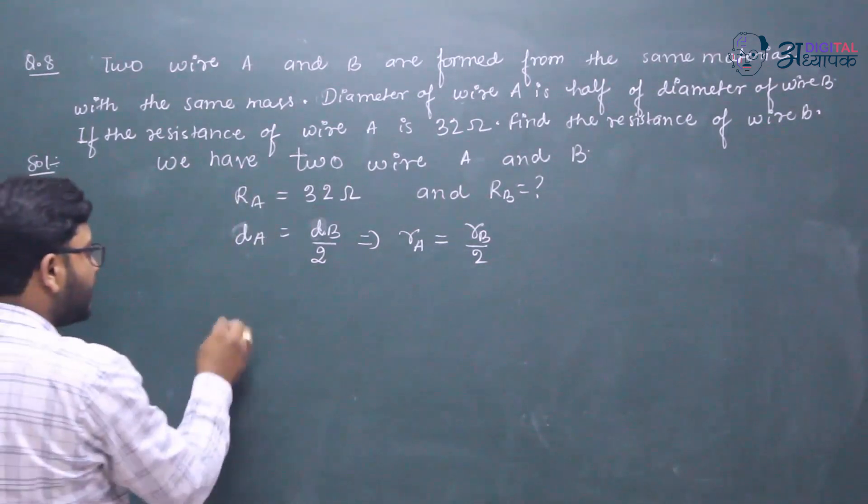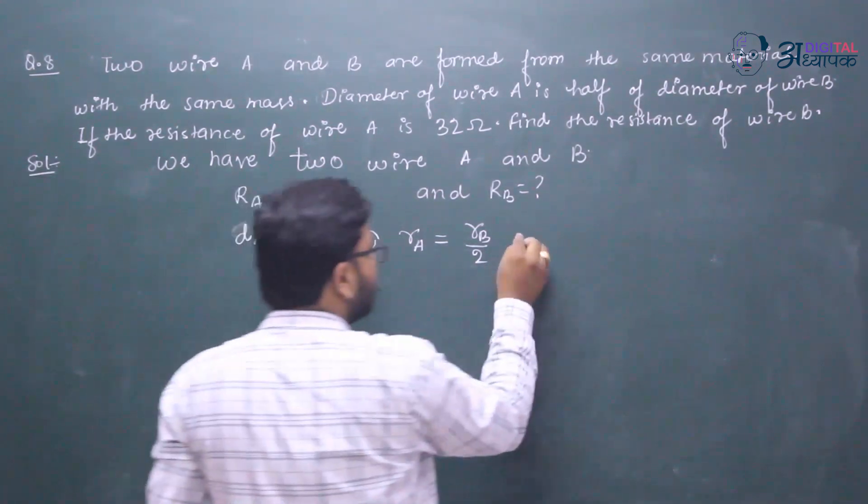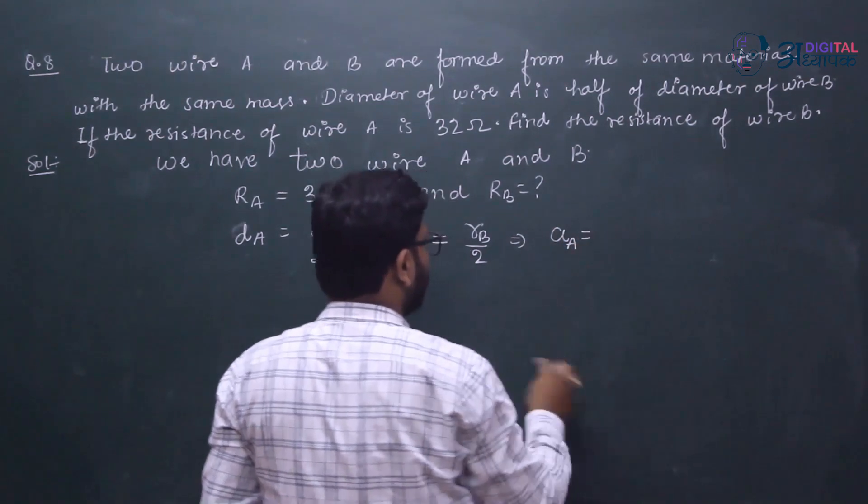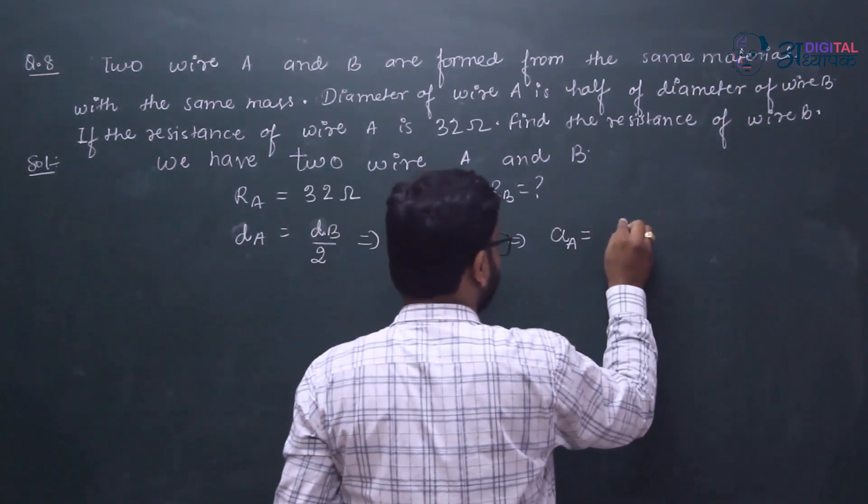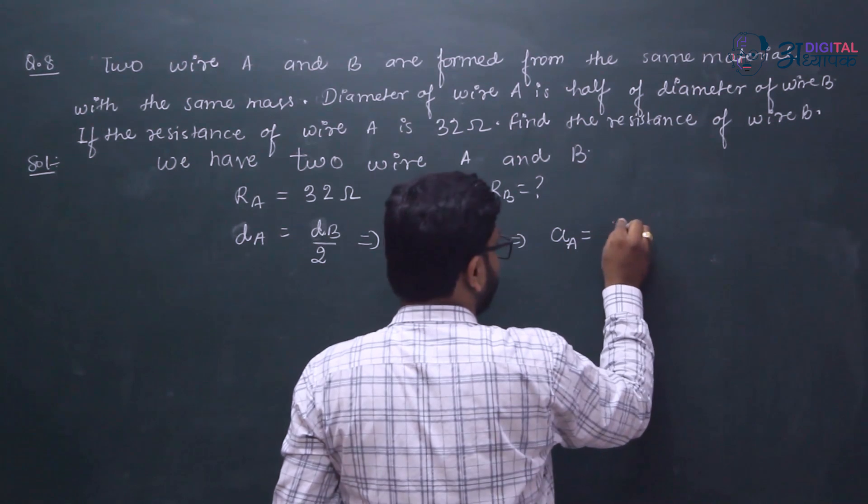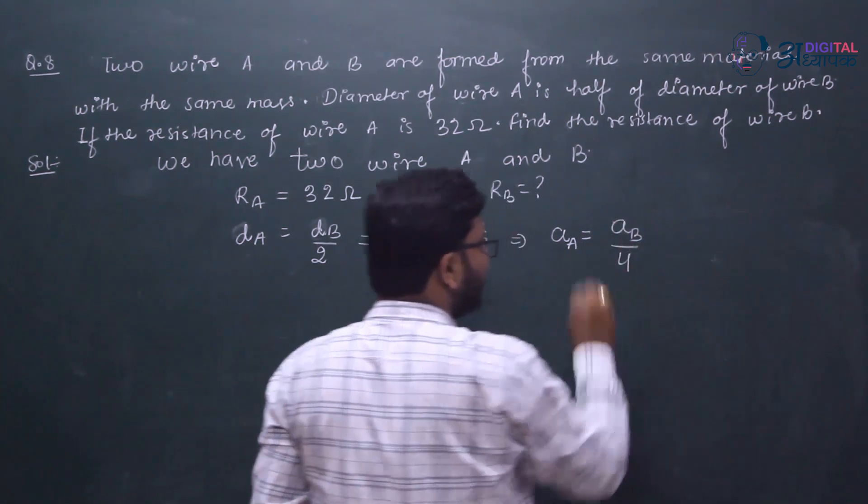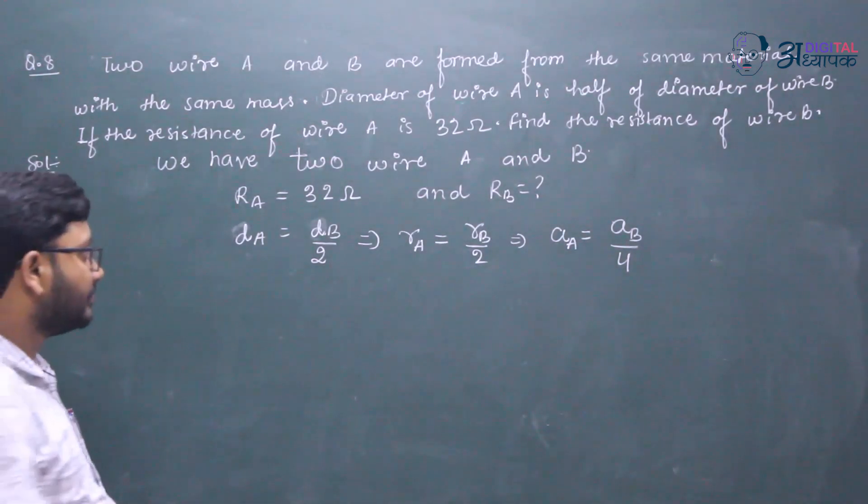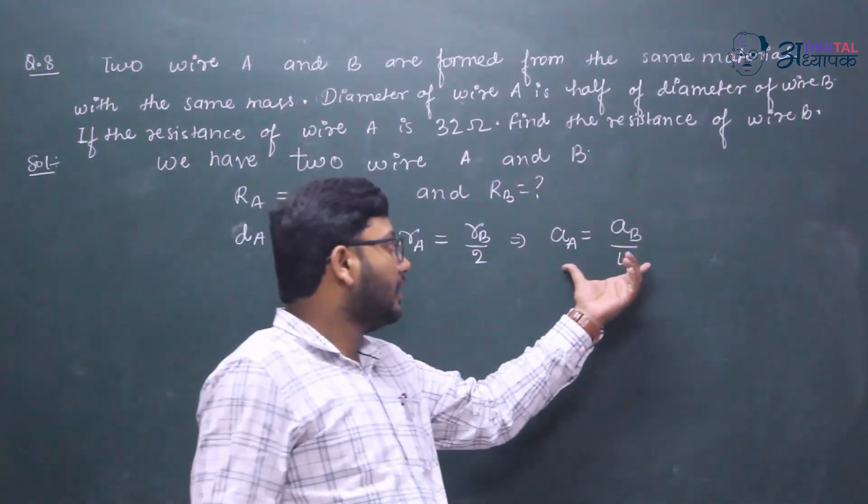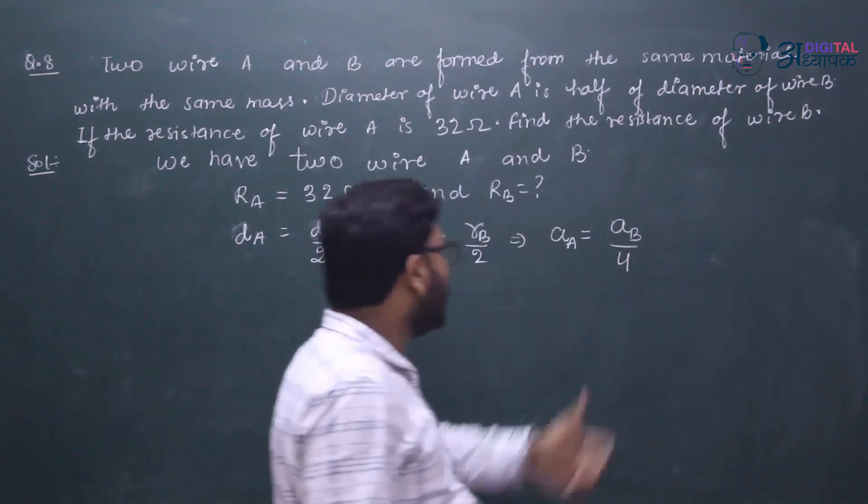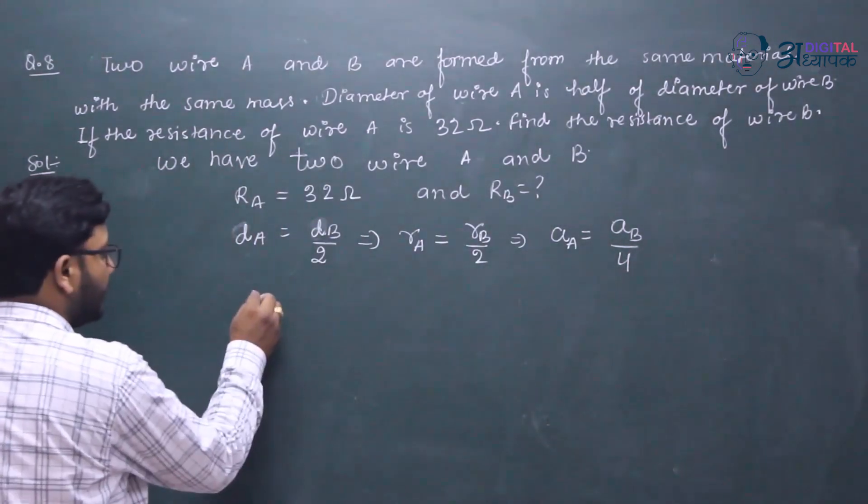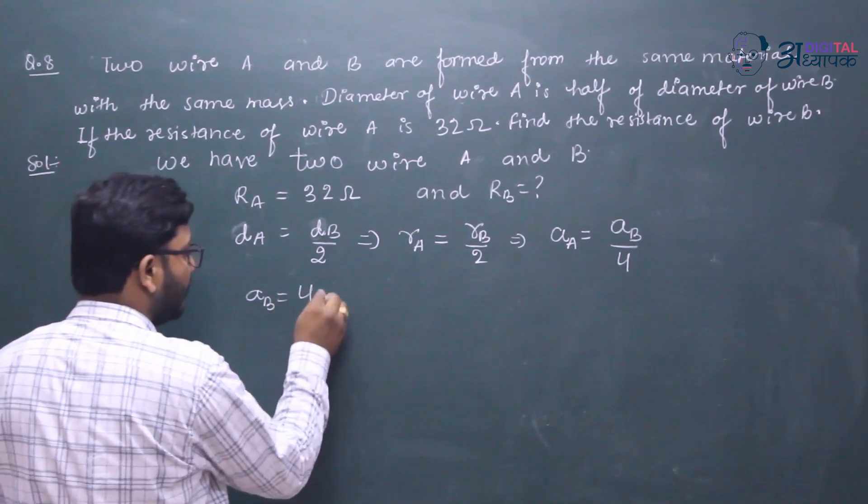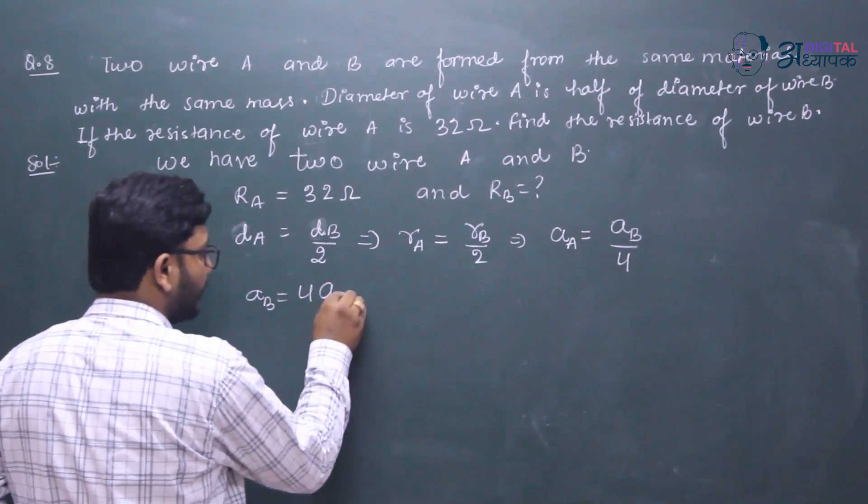You can apply this. The area of A is equal to area of B divided by 4. If it is like this, then AB is equal to 4AA.